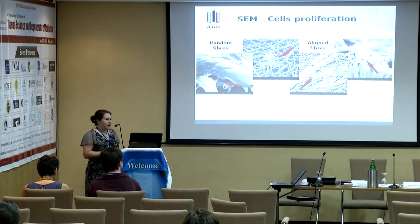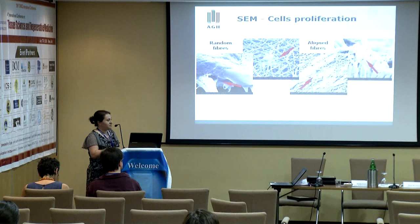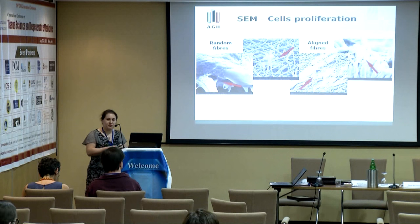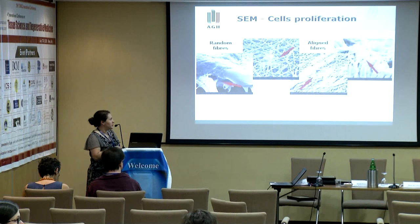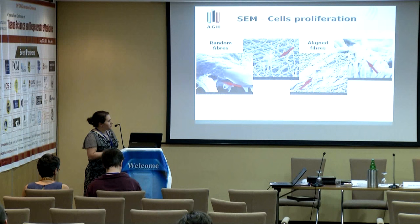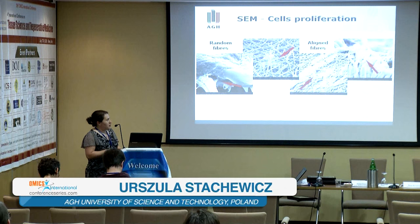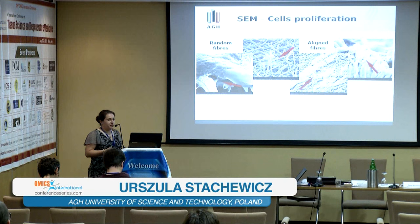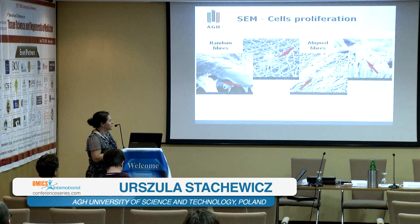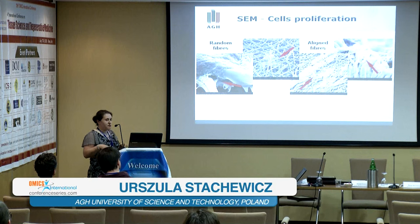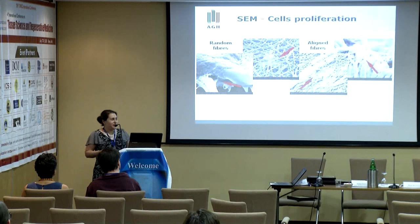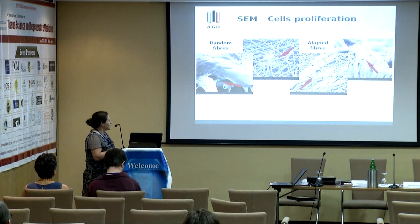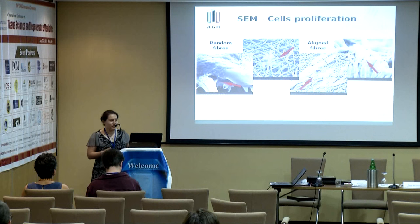You can align your fibers in one direction, and then the cells follow the direction of the fibers — they are nicely elongated compared to the random fibers. From the scanning electron microscopy you can see filopodia interconnecting between the fibers. In the case of random fibers, the cells actually grow inside the network even though they are bigger than the pores, and the filopodia go deep into the whole fiber network.